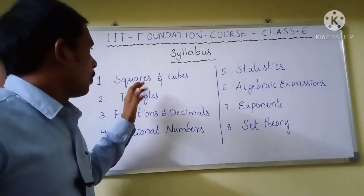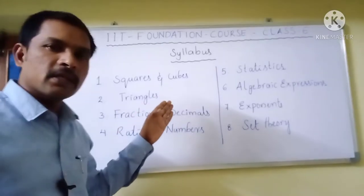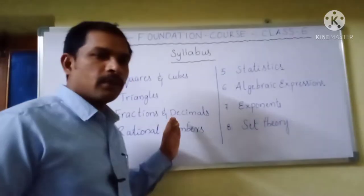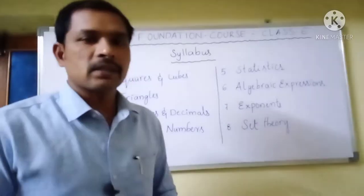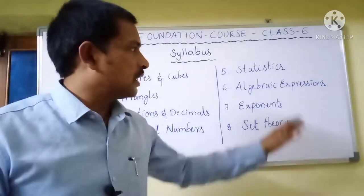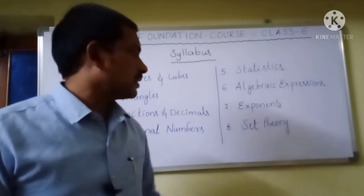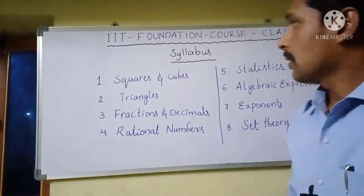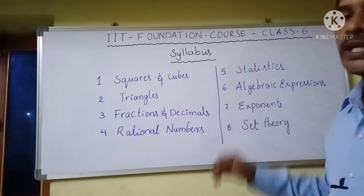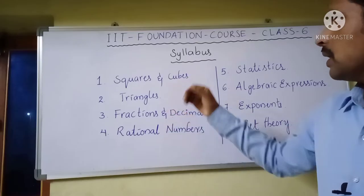Chapter 1 is Squares and Cubes. Chapter 2 is Triangles. Chapter 3 is Fractions and Decimals. Chapter 4 is Rational Numbers. Chapter 5 is Statistics. Chapter 6 is Algebraic Expressions. Chapter 7 is Exponents. Chapter 8 is Set Theory. This is the basic foundation course syllabus for 6th standard. We will first start with Squares and Cubes.